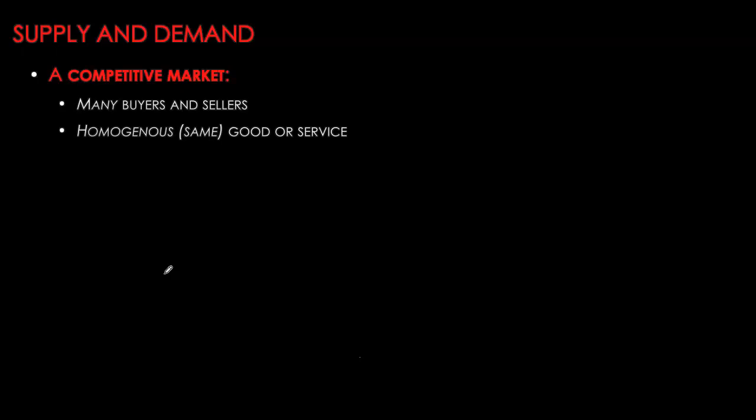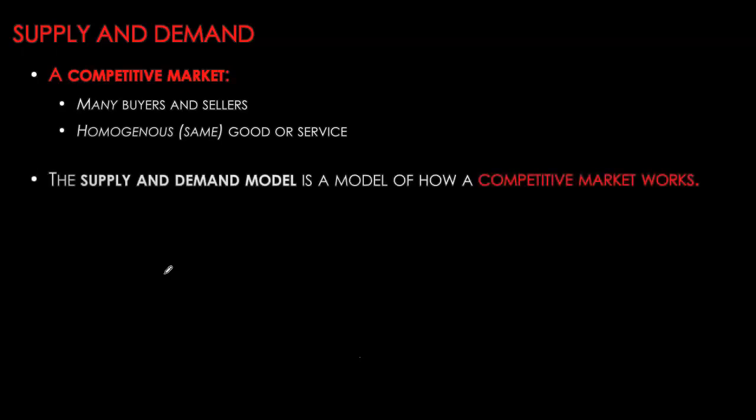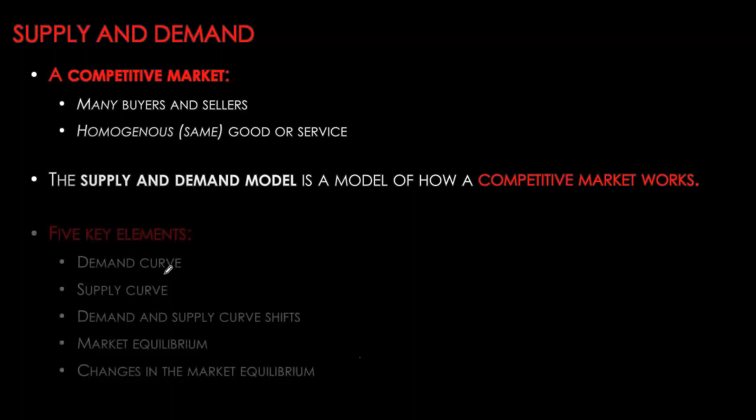So it's a homogenous or standardized product that the sellers are selling. The demand and supply model looks at how these buyers and sellers interact with each other and negotiate a price at which exchange will occur.